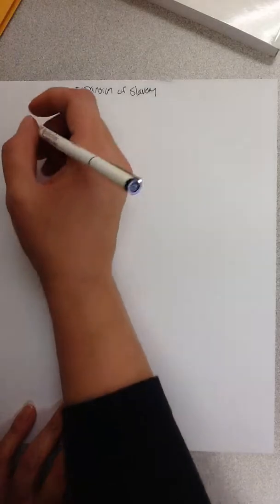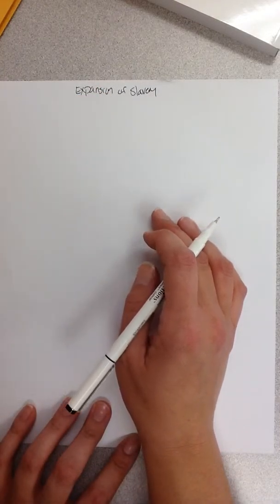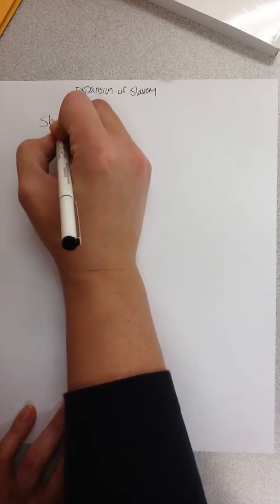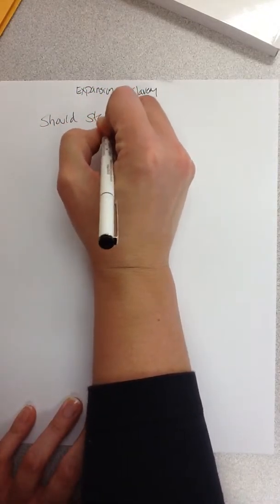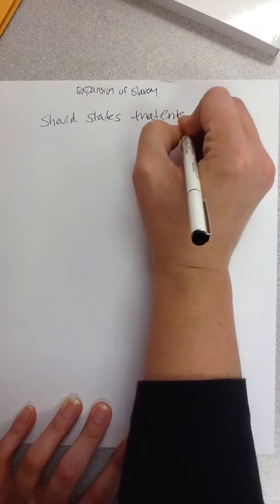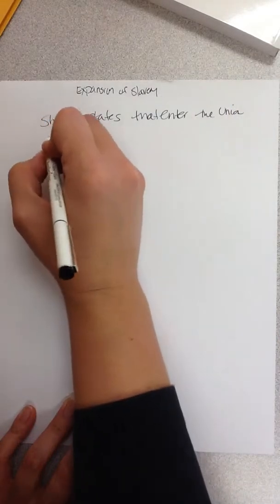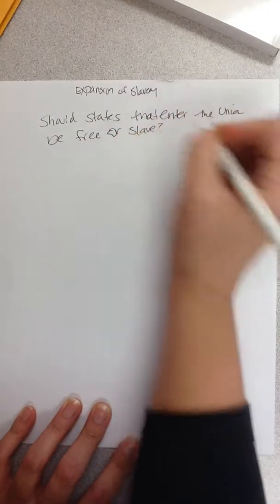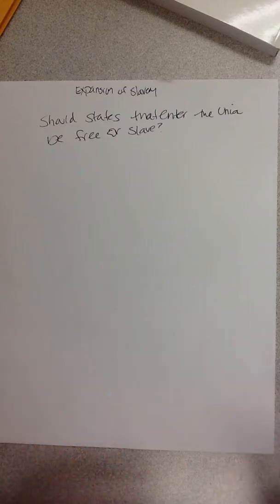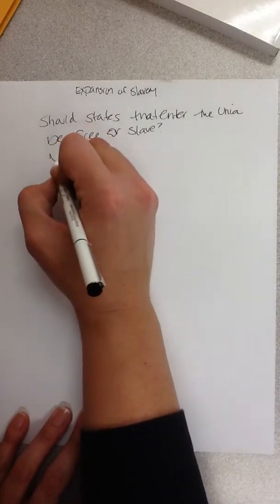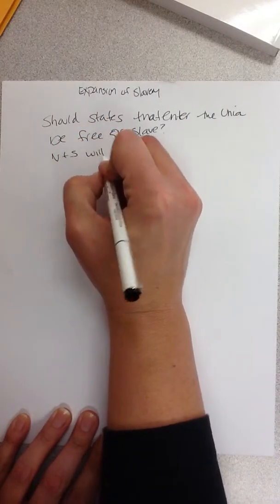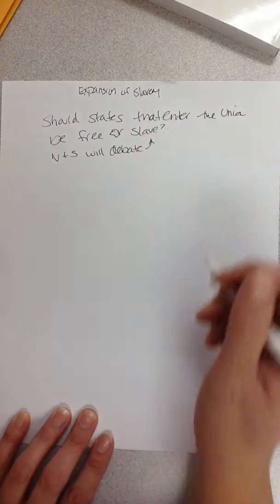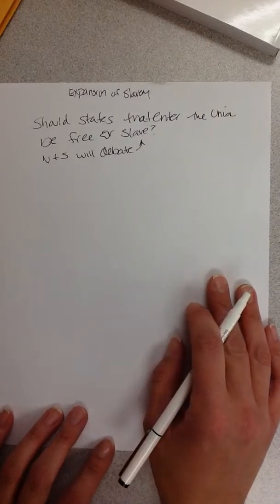This video we're going to focus on the expansion of slavery west, and basically the question we need to answer is: should states that enter the union be free or slave? That's the big question we're going to be answering through the look at the expansion of slavery and why they want to expand. The North and the South will debate this to the point where they're going to go to war — it's going to be called the Civil War.